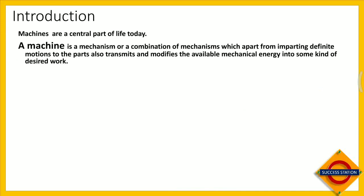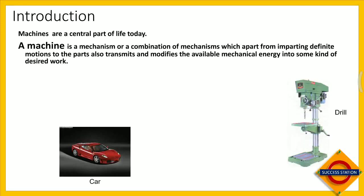A machine is a mechanism or combination of mechanisms which, apart from imparting definite motion, also modifies mechanical energy into useful work. The key word is 'apart' — motion hoti hi hai, but machine mein useful work bhi milta hai. So: structure plus mechanism makes the machine.